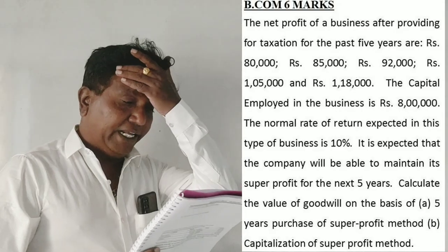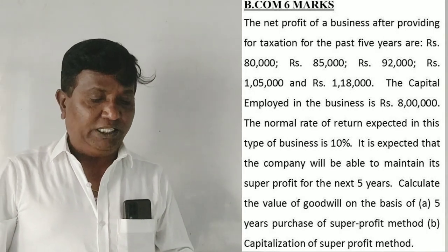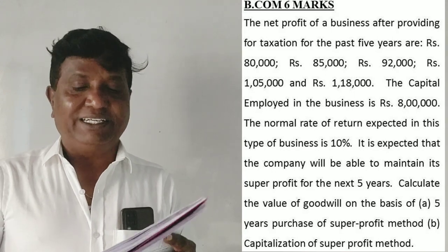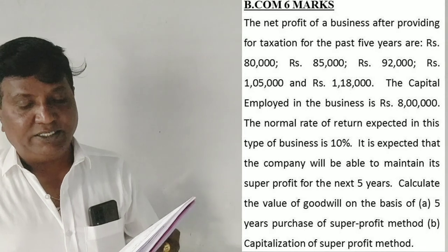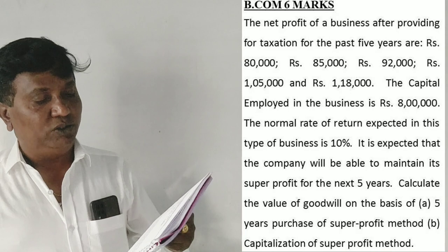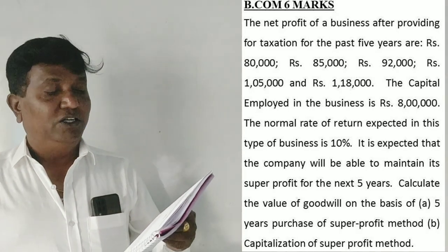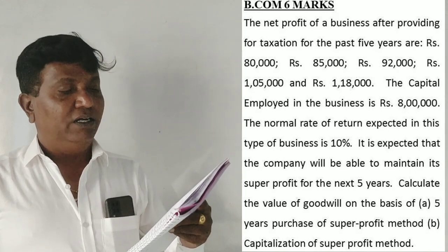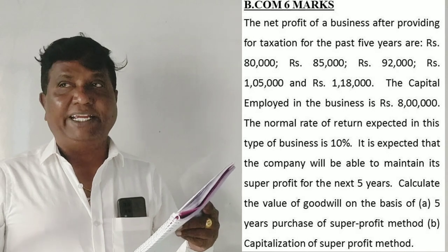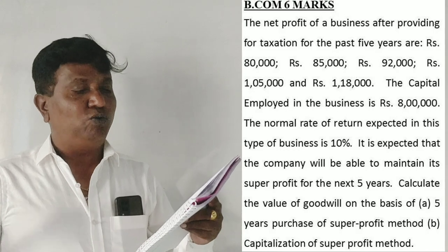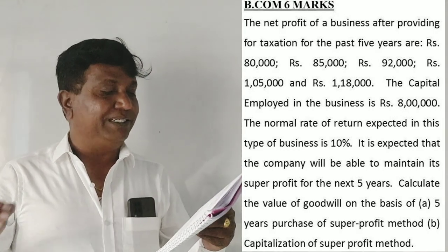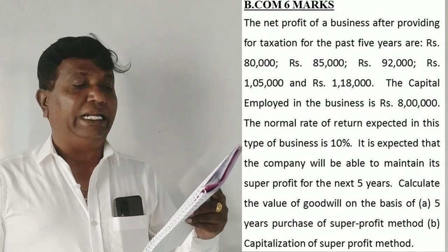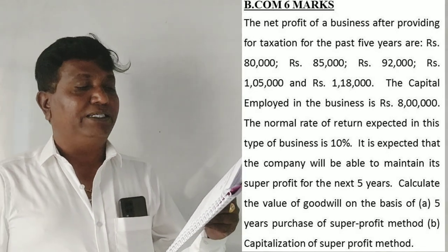Students, corporate accounting problem. The net profit of a business after providing for taxation for the past 5 years is: 80,000; 92,000; 85,000; 92,000; 1,05,000; and 1,18,000. The capital employed in the business is 8 lakhs. The normal rate of return expected in this type of business is 10%. It is expected that the company will be able to maintain its super profit for the next 5 years. Calculate the value of goodwill on the basis of the super profit method and the capitalization of super profit method.